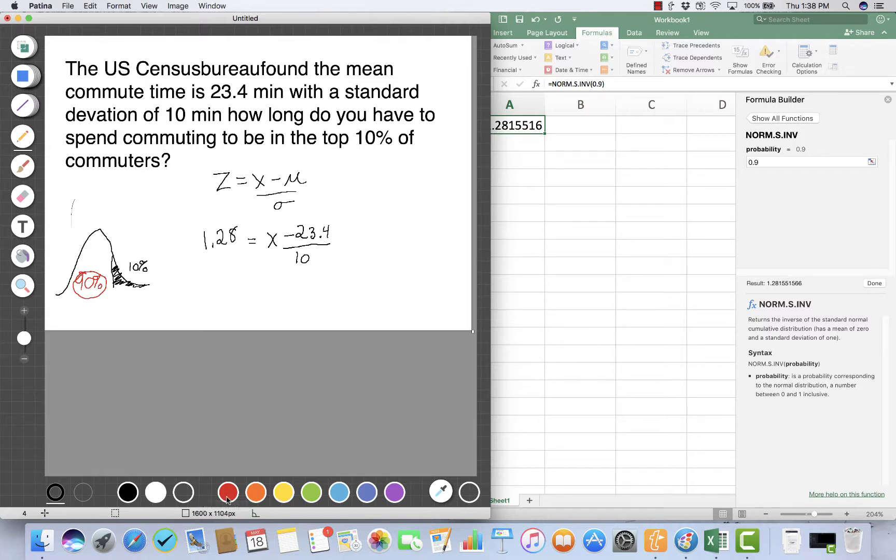To solve, I multiply 1.28 times 10, which equals X minus 23.4. Multiplying gives 12.8, then adding 23.4 to both sides. This means if I'm interested in being in the top 10% of commuters, or commuting longer than most of the population, I need to commute 36.2 minutes.